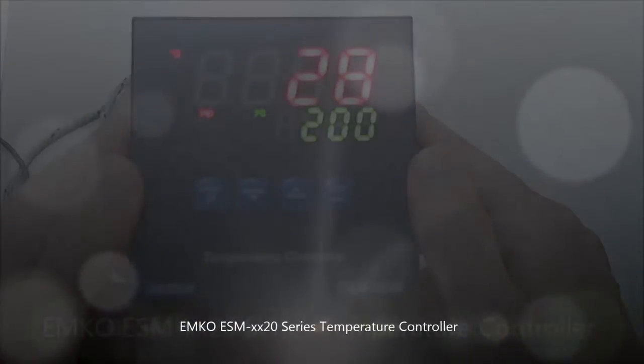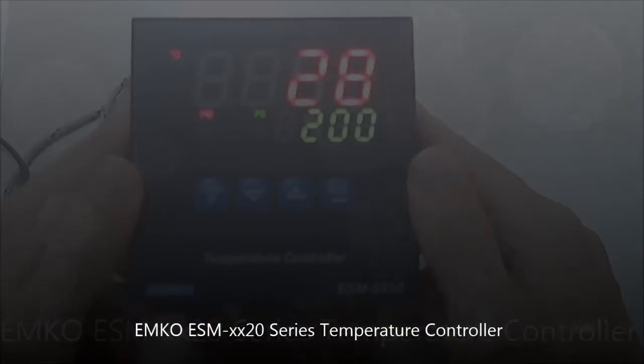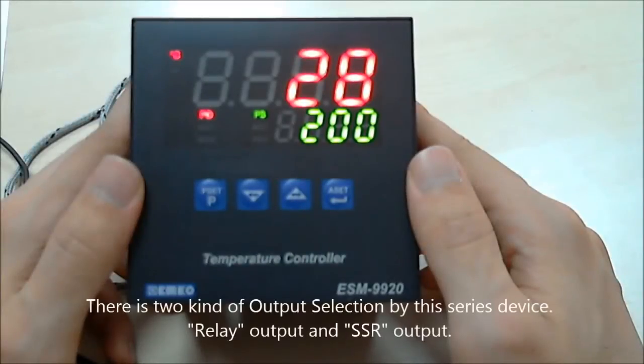This is the Emco ESM-9920 series temperature controller. There are two kinds of output control on this device: relay output control and SSR output control.